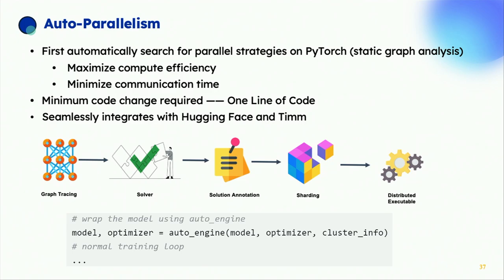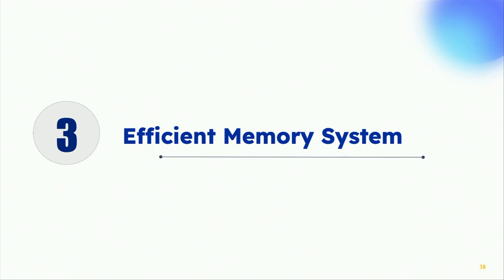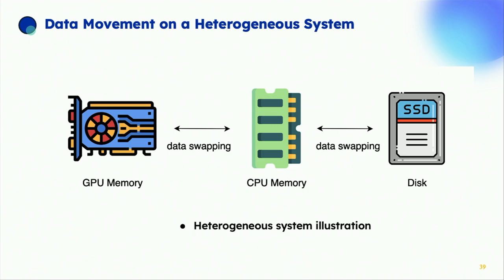Now let's discuss using memory more efficiently. In a heterogeneous system, the GPU does most of the compute but has limited memory. We can use CPU memory and non-volatile disk storage to make room for model storage. We want to automatically swap data among these different platforms during runtime, keeping only what's needed for the next step in GPU memory — allowing us to accommodate much larger models.